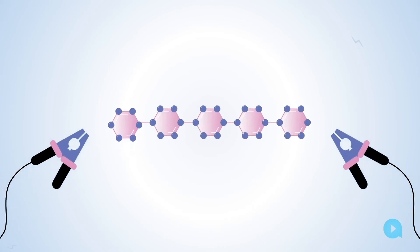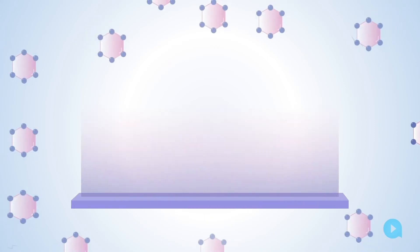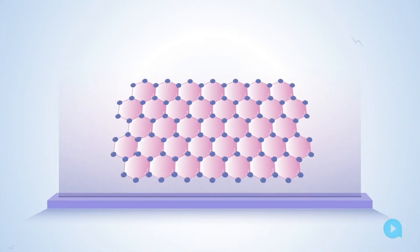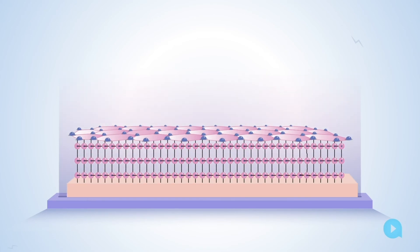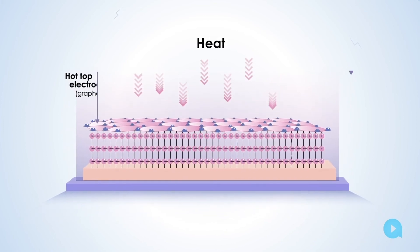However, molecules are short, so it is hard to make contact to the top of each molecule. Enter the wonder material graphene. Graphene is a sheet of carbon one atom thick, which can be draped over the layer of molecules. It conducts electricity and is very thin, so it lets heat through from the heat source.